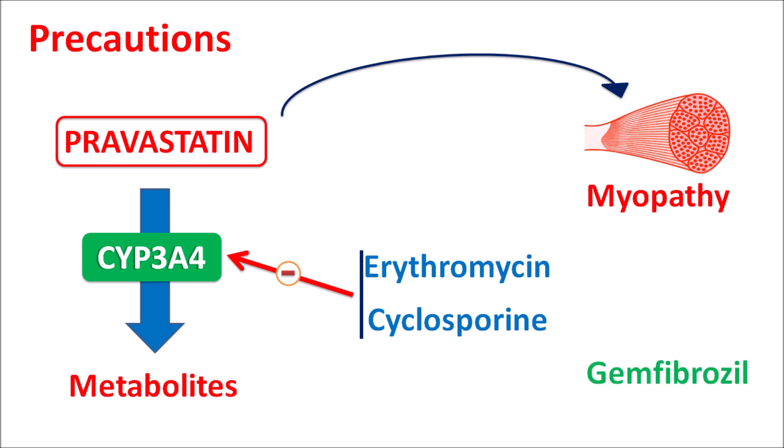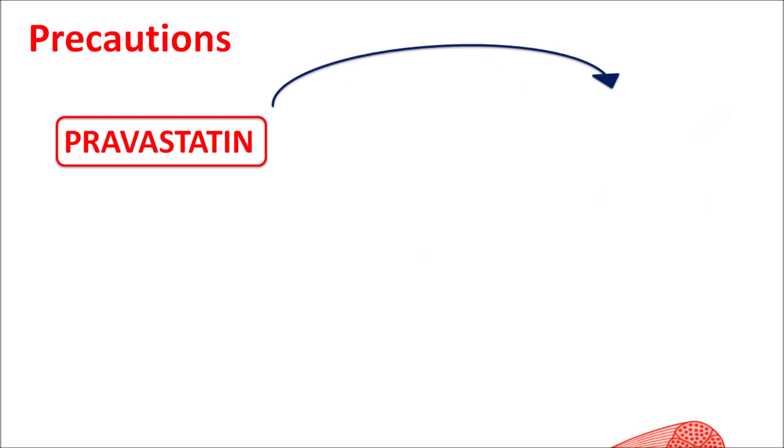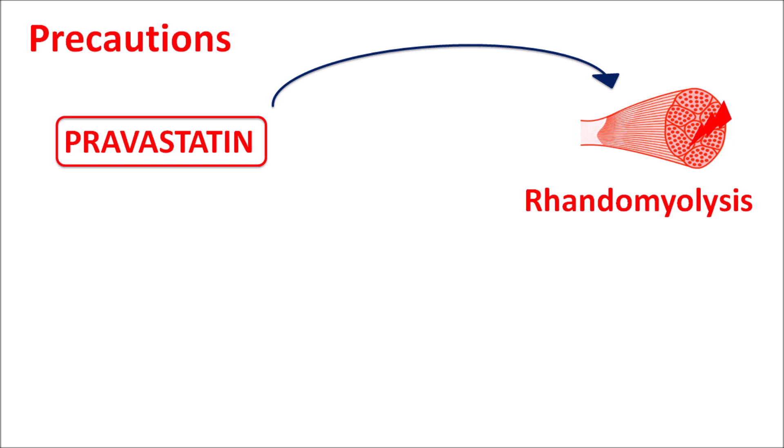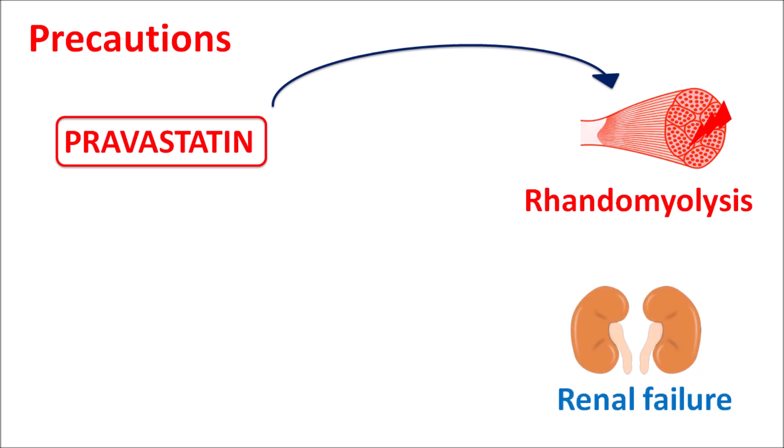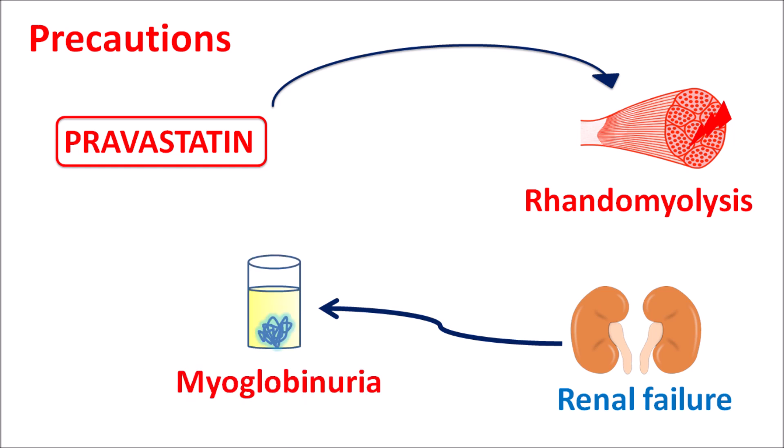Fibrates like gemfibrozil can also produce myopathy, so when pravastatin is combined with this drug it can further increase the risk of myopathy. This combination should only be given in patients where benefits outweigh adverse reactions. Similarly, pravastatin can also produce rhabdomyolysis — the dissolution of muscle fibers — which is more pronounced in patients with renal failure, where increased protein precipitation results in myoglobinuria. In patients with severe renal failure, this drug is contraindicated.